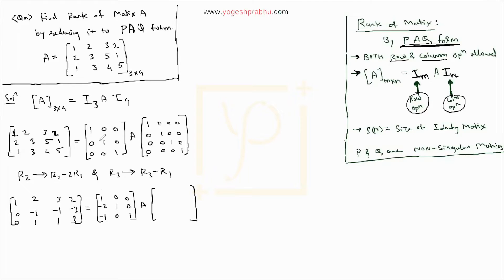The row operations are performed on A and I₃. The second identity matrix, I₄, will remain as it is: 1 0 0 0, 0 1 0 0, 0 0 1 0, 0 0 0 1. It is unchanged by row operations.